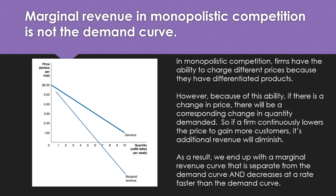In perfectly competitive markets, marginal revenue and price were the same. Now they are different. Price is always determined by the demand curve itself. So even though marginal revenue might be $4.00 at three units, we're still charging $5.00 for the product. Marginal revenue only reflects the additional revenue from that additional unit. The key takeaway is that profit maximization still occurs where marginal revenue equals marginal cost, so our profit-maximizing level of output is still determined that way.